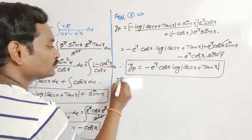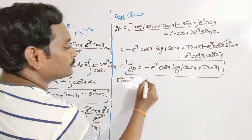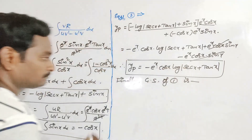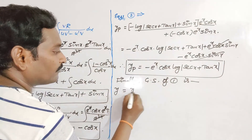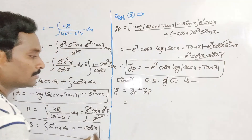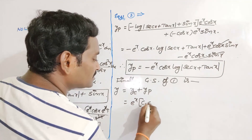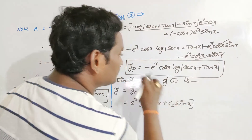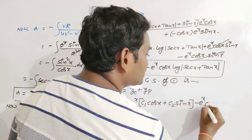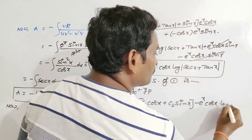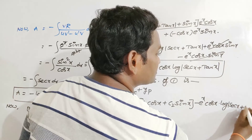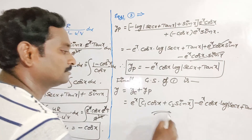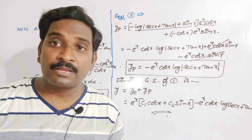The general solution of the differential equation is y = yc + yp. So y = eˣ(c₁ cos x + c₂ sin x) − eˣ cos x · log|sec x + tan x|.